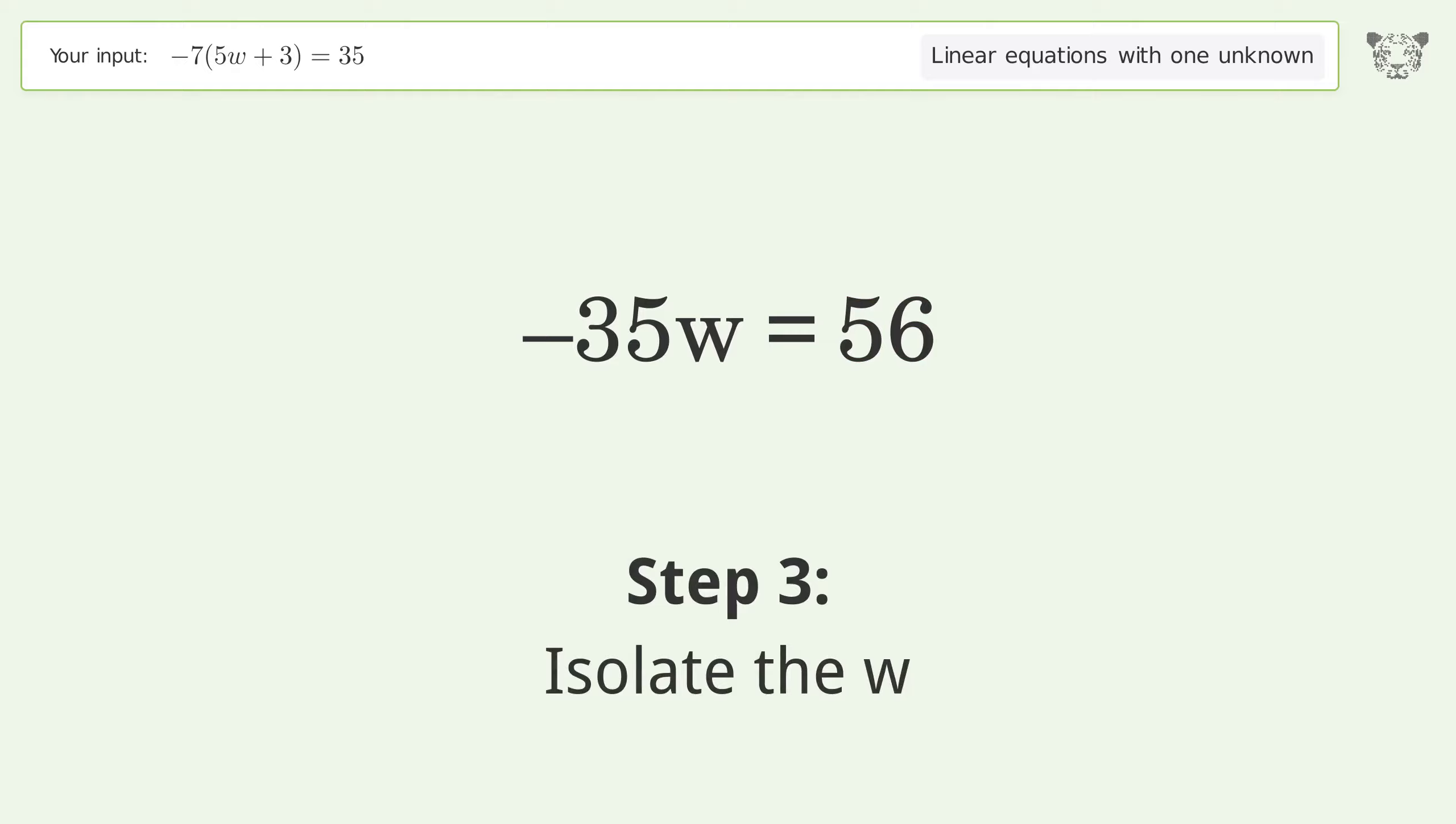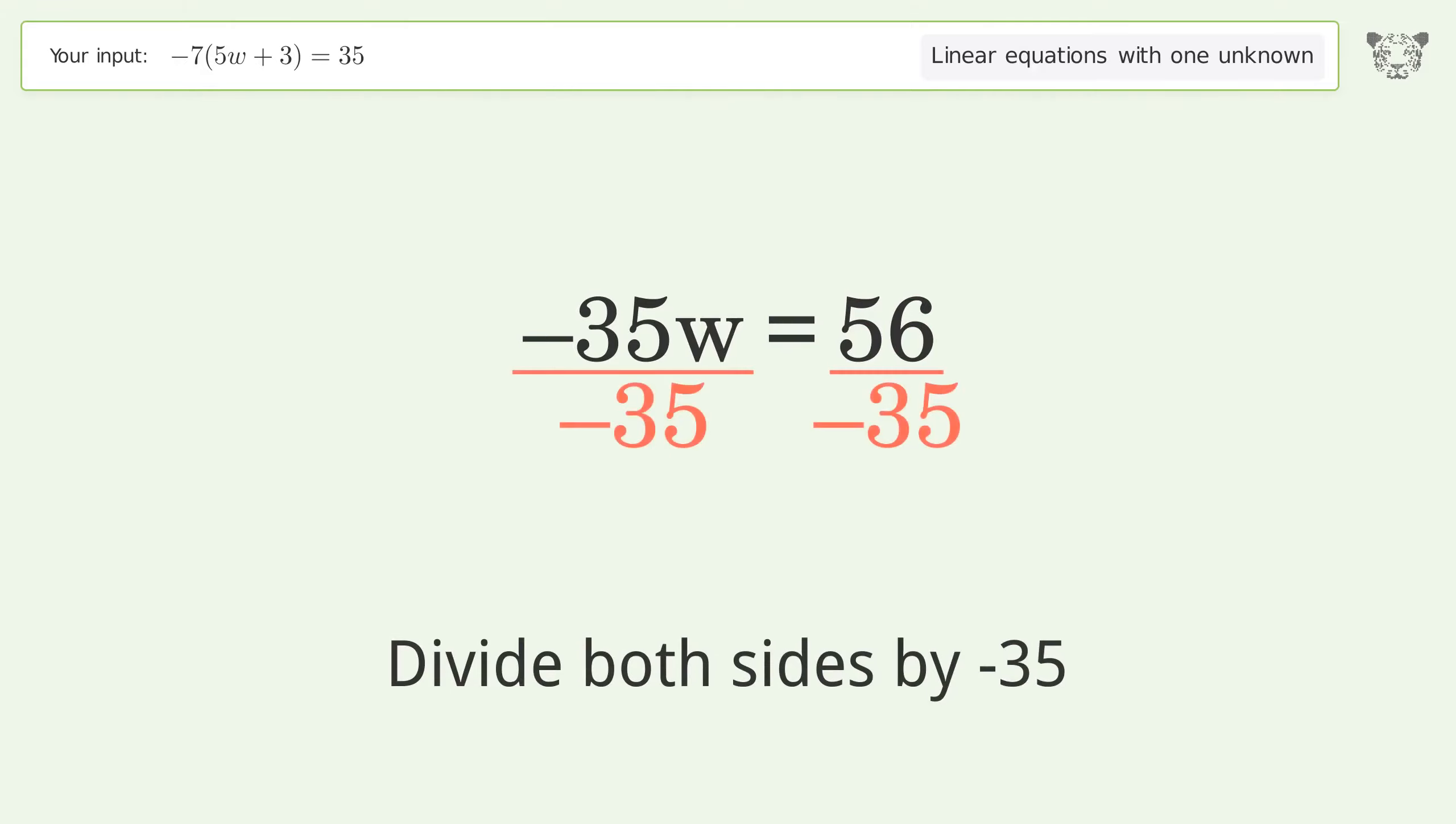Isolate the w: divide both sides by negative 35. Cancel out the negatives.